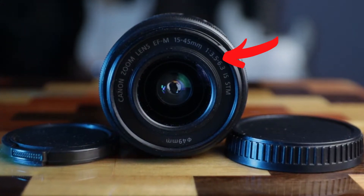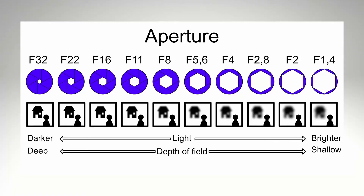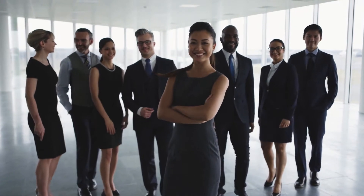To understand what that is, we need to talk about aperture. Aperture is simply how much light passes through the lens onto the camera sensor, and the numbers relate to the opening of the lens. For example, if you have a lens at f2, the opening of the lens would be quite large. This enables more light to pass through and gives you a narrow depth of field — otherwise known as background blur. The higher the number, the smaller that opening is, letting in less light, and the depth of field is much wider.